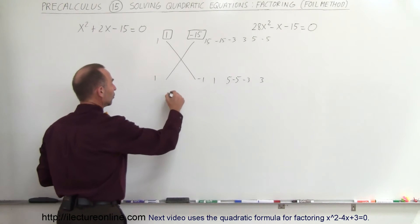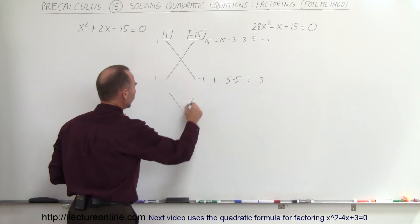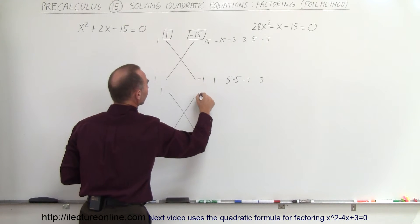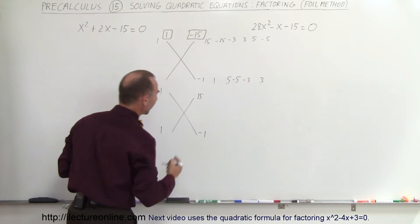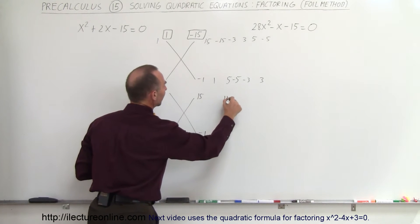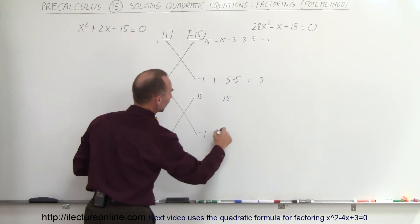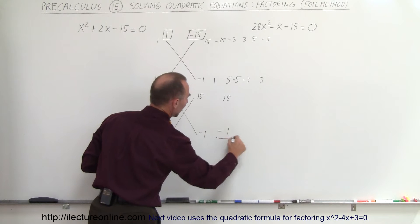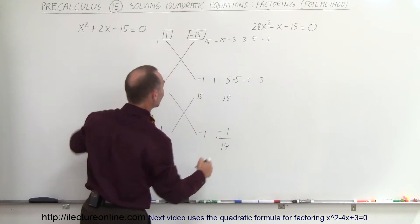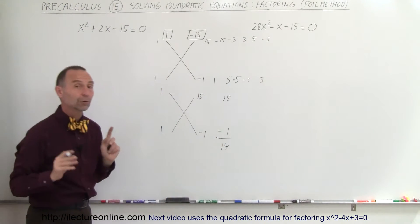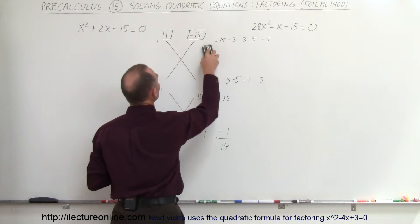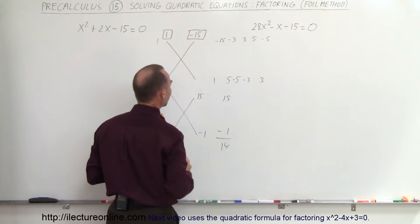Let me show you how that works. Draw the two FOILs again, put 1 and 1 down here, and let's try 15 and negative 1. So we multiply 1 times 15, that gives me 15. 1 times negative 1 gives me minus 1. When we add them together we get positive 14, which is not the plus 2 I was looking for for the middle term. That means that combination doesn't work, so we get rid of the 15 and the minus 1.